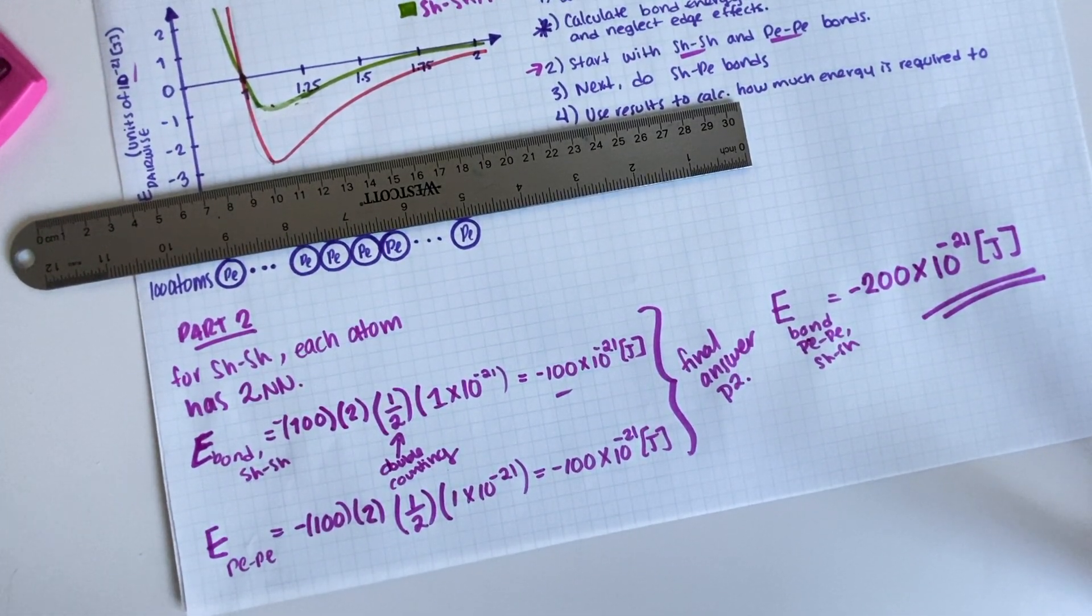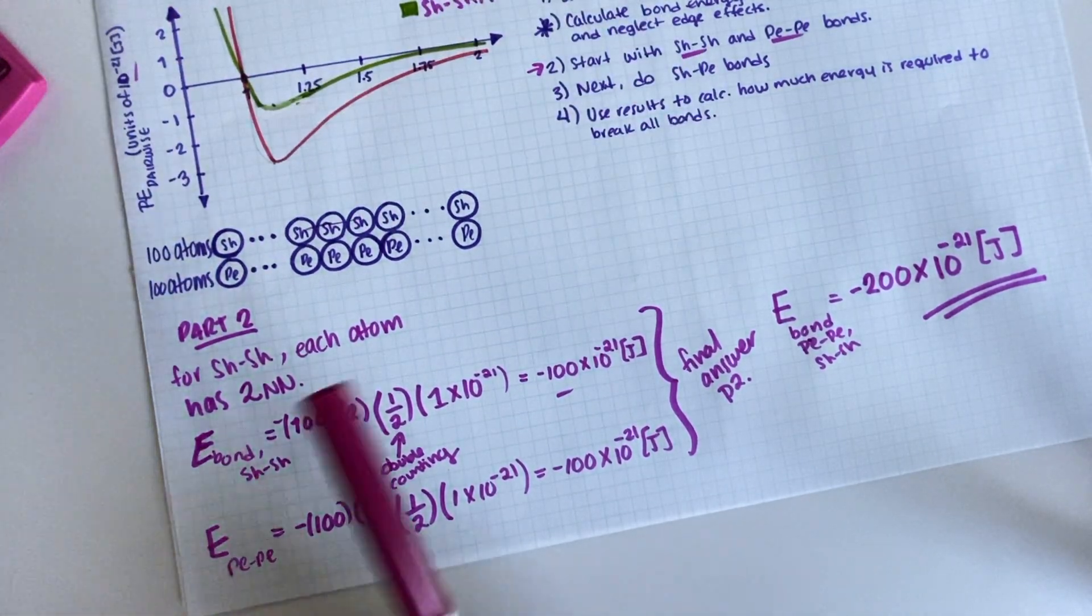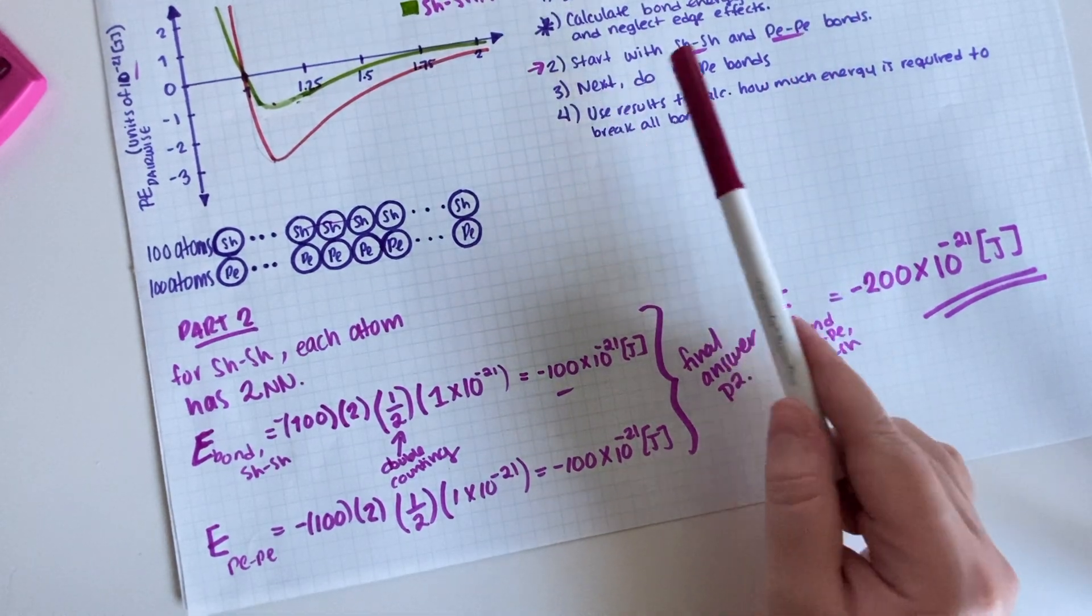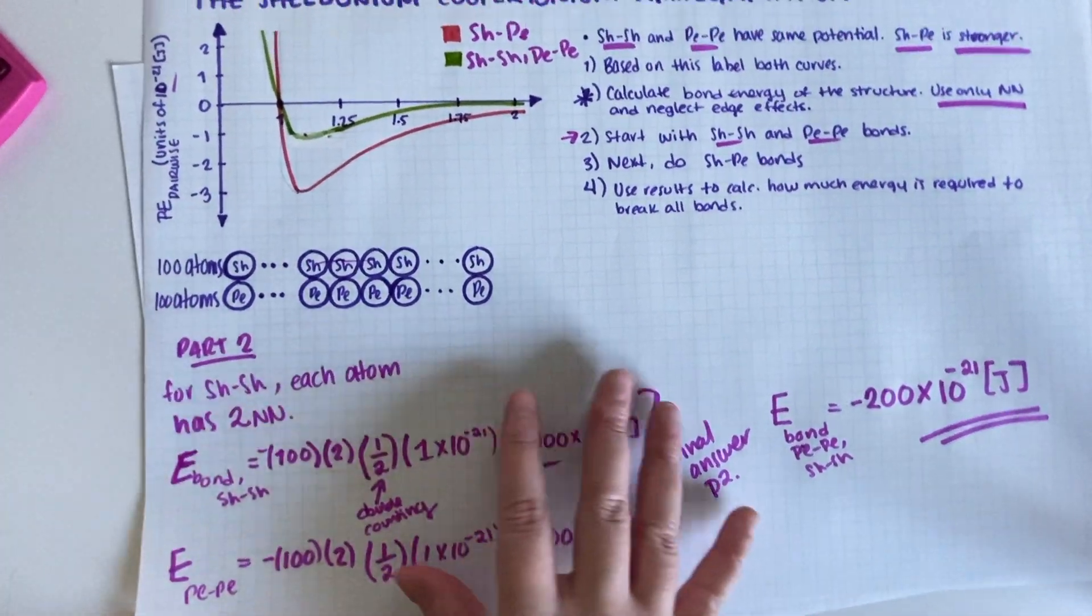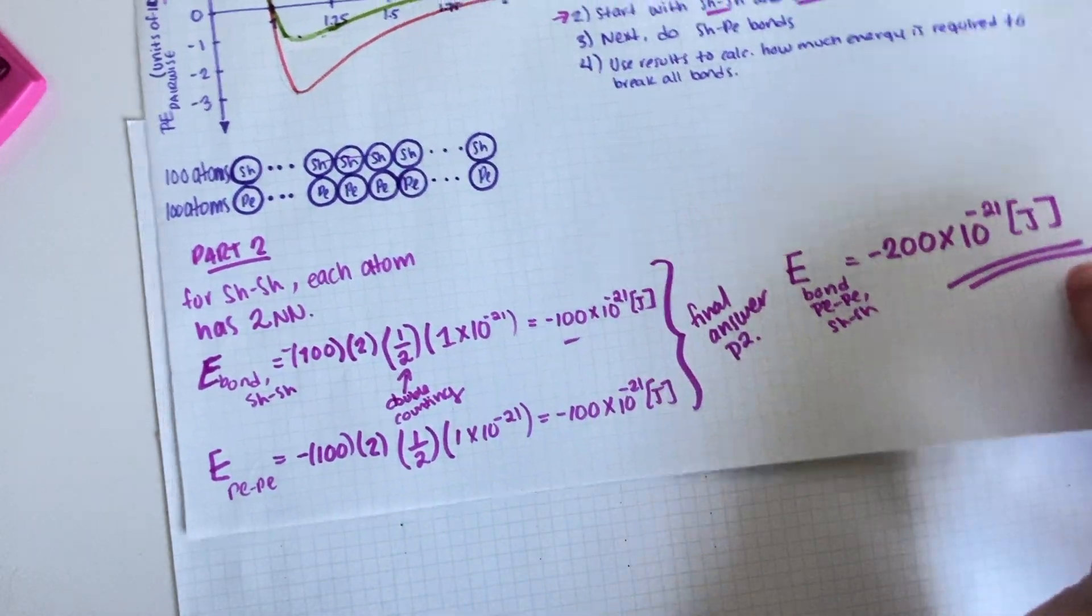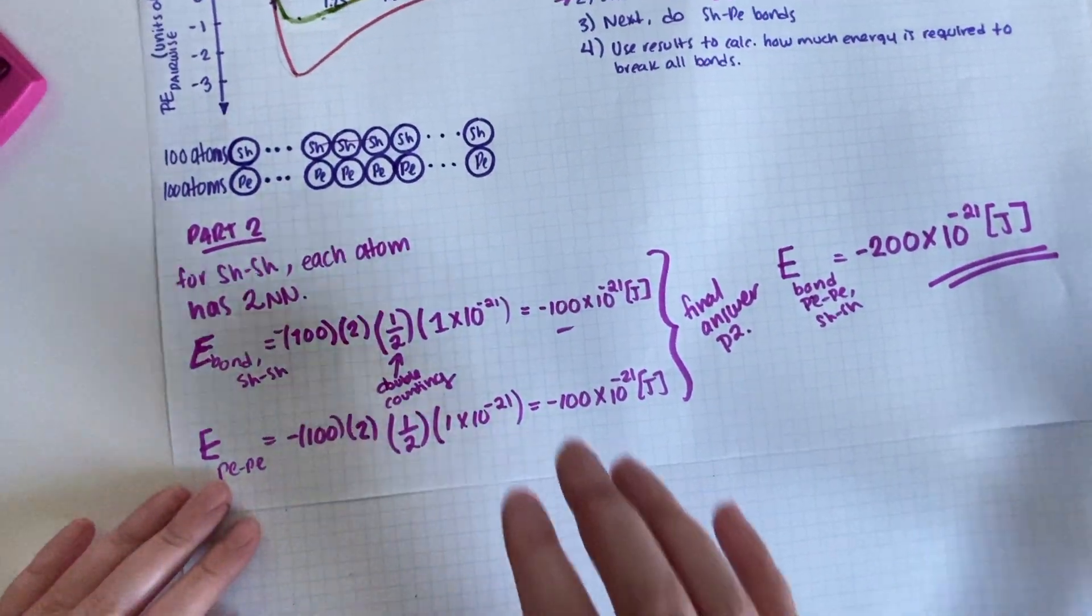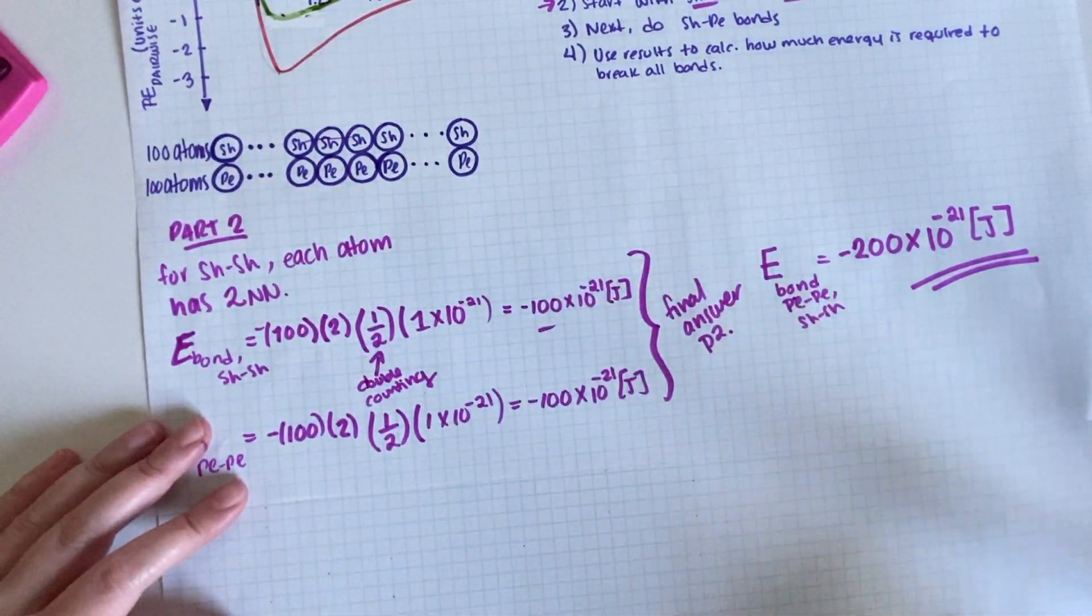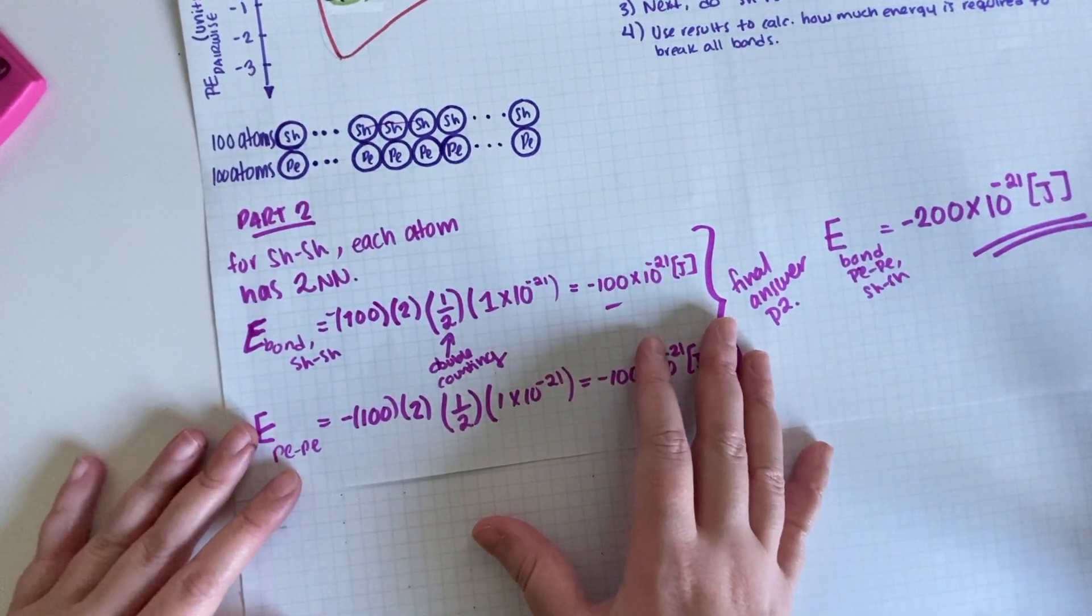Okay, but that is only for Sheldon-Sheldons and Coopertonium-Coopertoniums. Part three says, okay, now focus on the Sheldonium-Coopertonium bonds. So we're gonna go ahead and do that. Now for part two it was very easy to just ignore this structure and just do the Sheldoniums first and then the Coopertoniums. For this part we are actually gonna have to do them together.